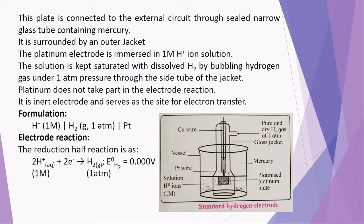Whether the standard hydrogen electrode functions as a cathode or an anode depends on the nature of the other electrode with which it is connected. Its potential is 0.000 volt, and the reduction half reaction is written at the cathode.